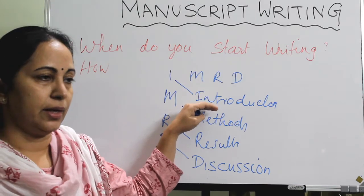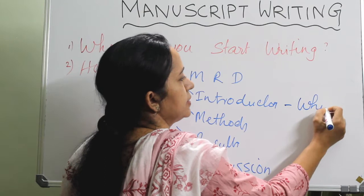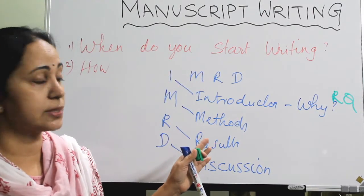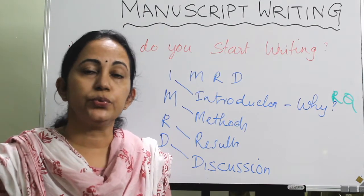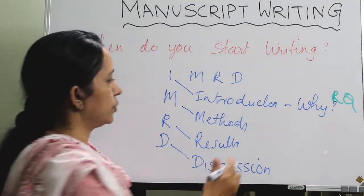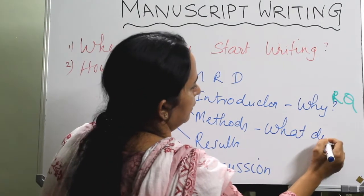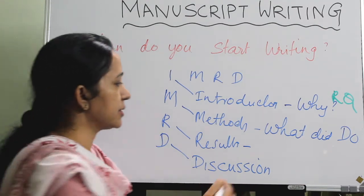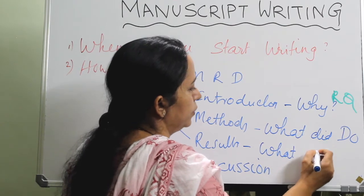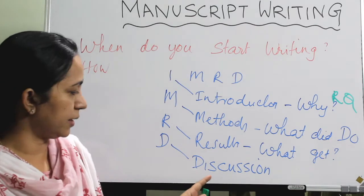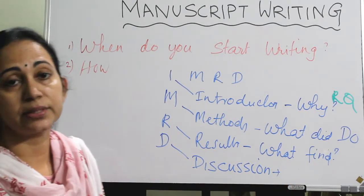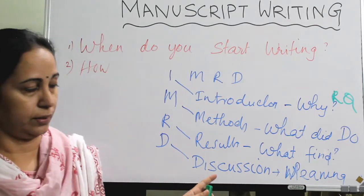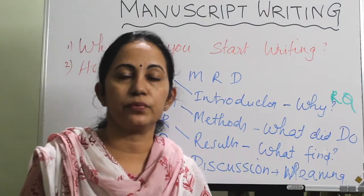In the introduction, you write why you started doing this study — it starts with the research question. In the methods, you write what you did to find out the answer to the research question. In the results, you write what you got — what you found from the study. In the discussion, you write what all these mean — the meaning of everything you have done so far.